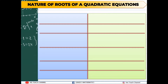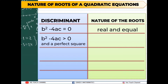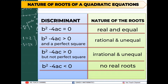After getting the discriminant, these are the possible natures of our roots. If the discriminant is 0, the nature of the roots is real and equal. If it is greater than 0 and a perfect square, the nature is rational and unequal. If it is less than 0 or a negative number, the nature of the roots is no real roots.